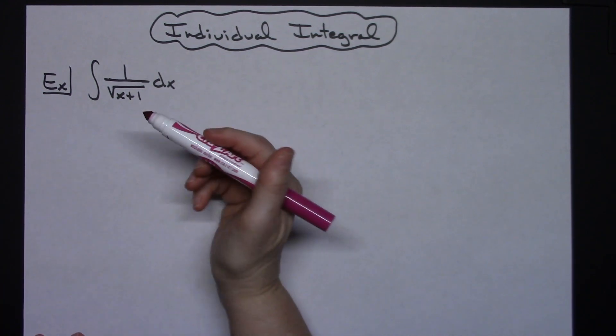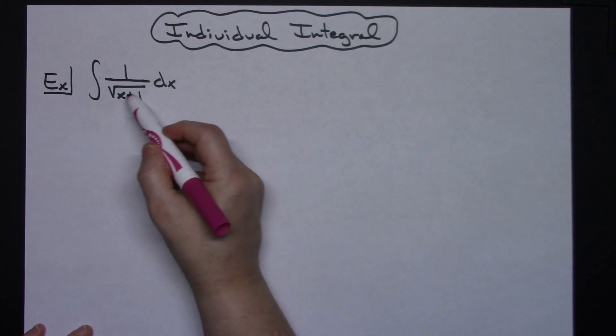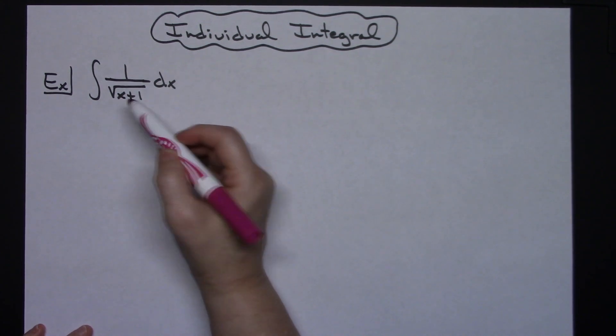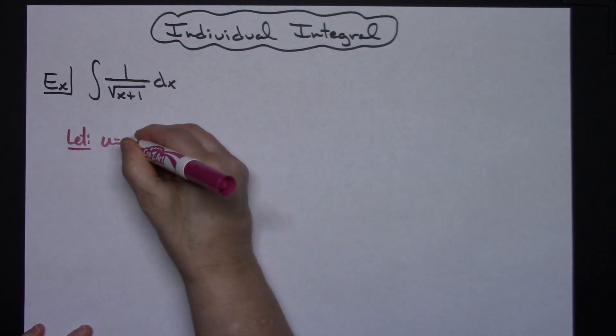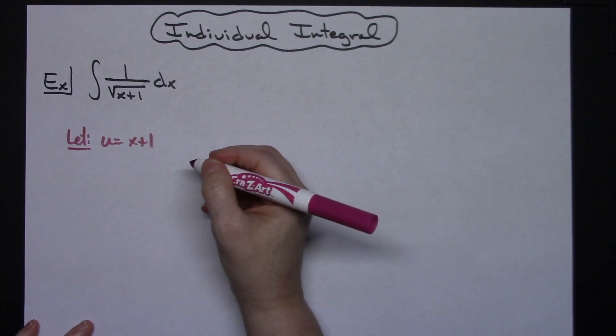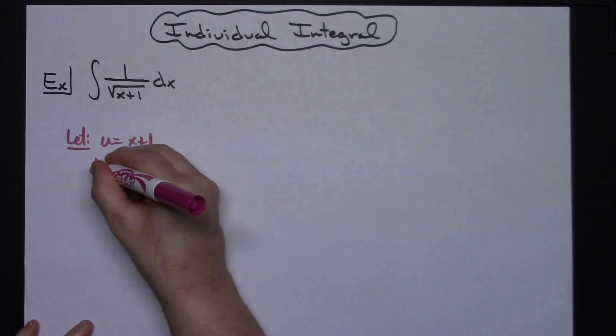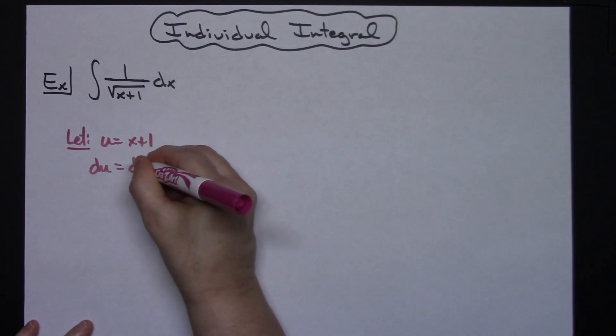The first thing we're going to do is look for that inside part of the function, and we can see that that's going to be x plus 1. So we're going to let our u equal x plus 1. We're going to take the derivative of both sides. That'll give us du is equal to dx.